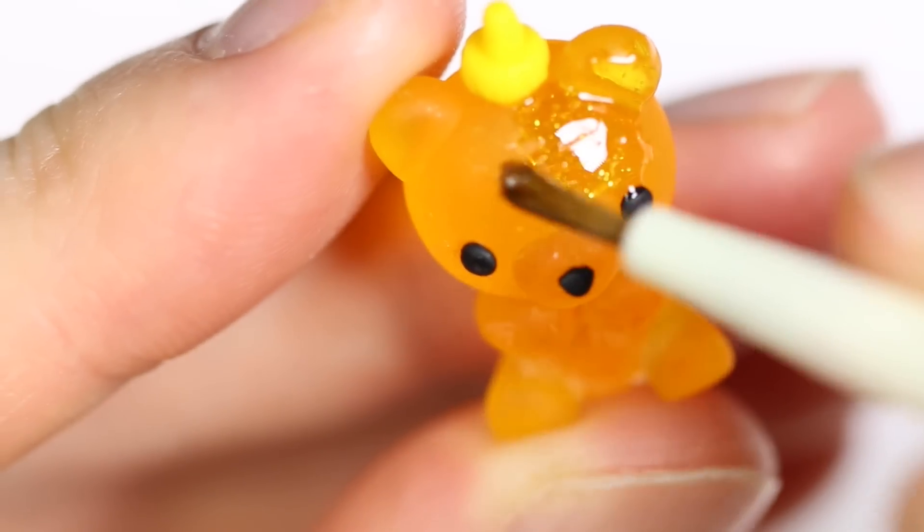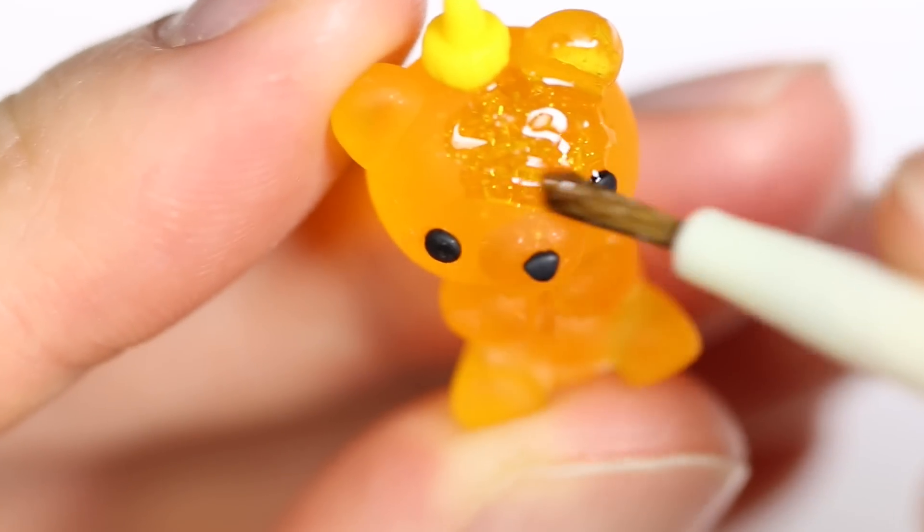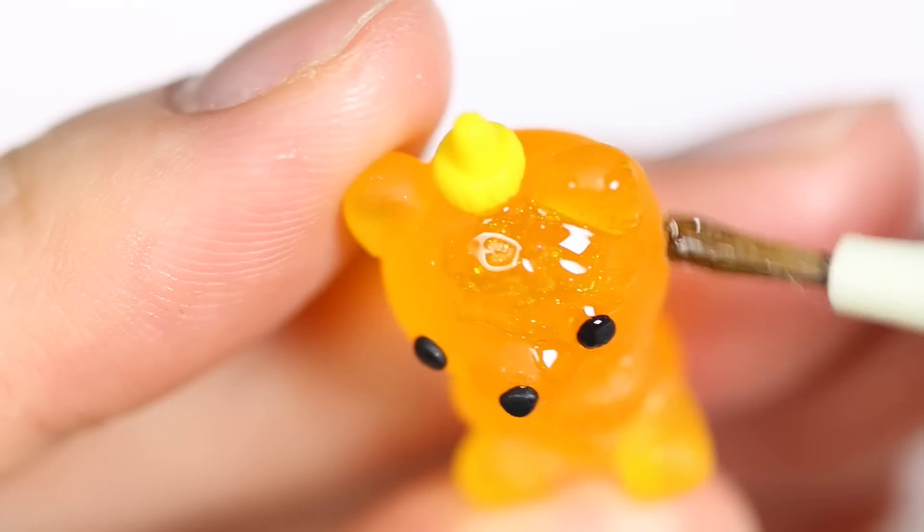And finally, I'm giving it a nice layer of glaze to give it that nice glossy look. And once it's dry, you should have your finished honey bear bottle.